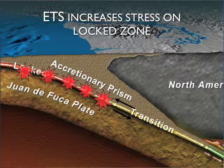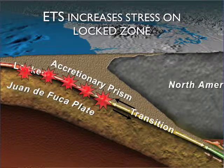Now, like I said, this is a hypothesis. We don't have much more evidence that this actually can occur, other than it seems reasonable. But these ETS events occur on different places of the fault at different times. So which one is going to be the trigger, if any of them? In other words, at this point, we can't use them for earthquake prediction.